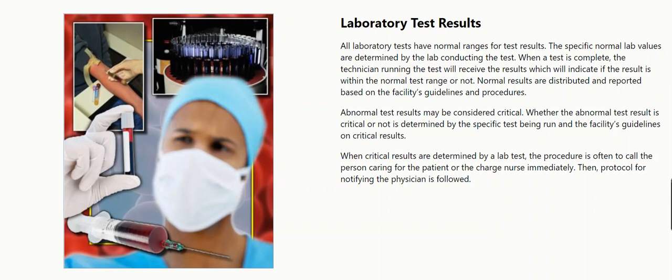All laboratory tests have normal ranges for test results. The specific normal lab values are determined by the lab conducting the test. When a test is complete, the technician running the test will receive the results, which will indicate if the result is within the normal test range or not.